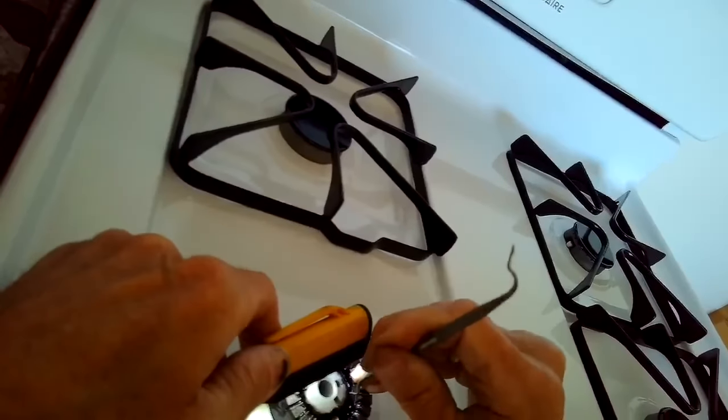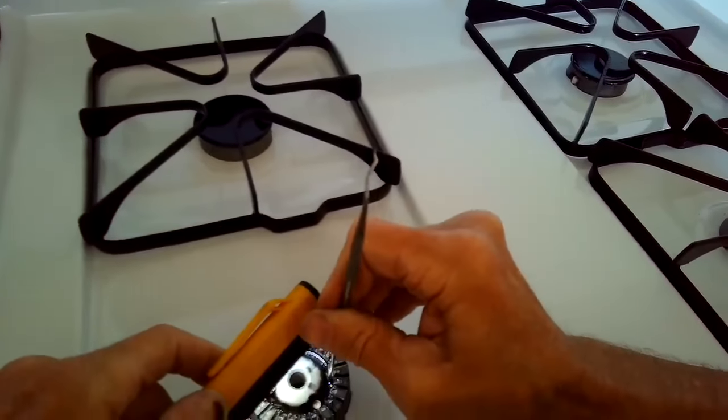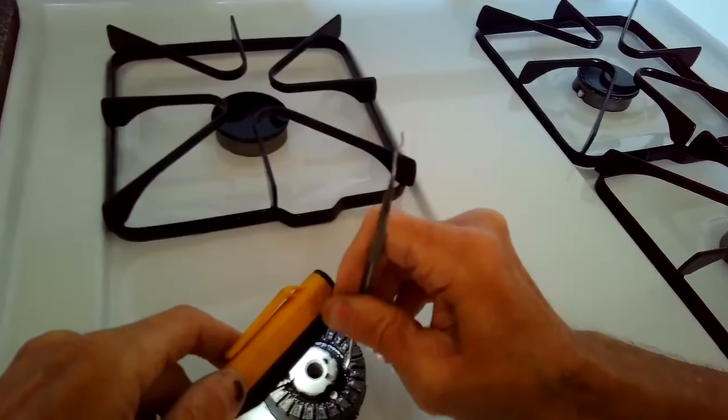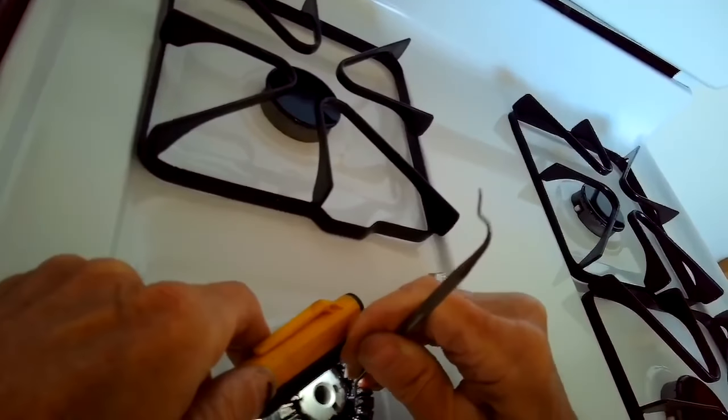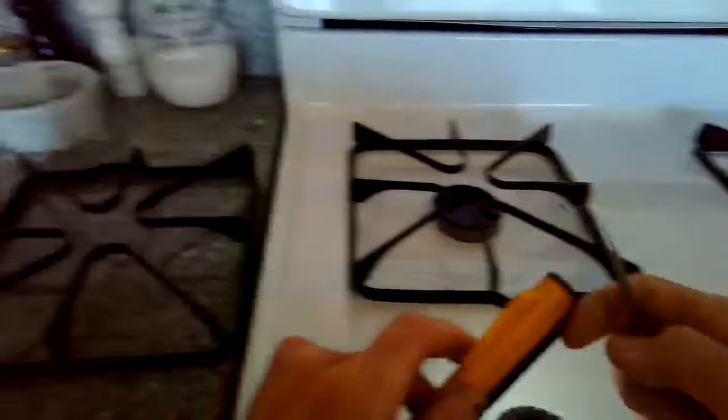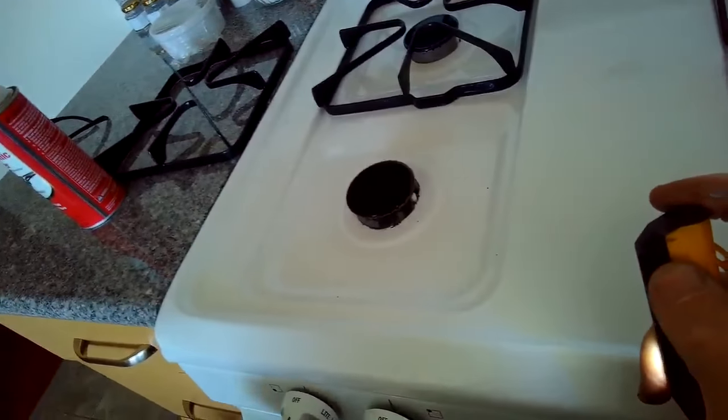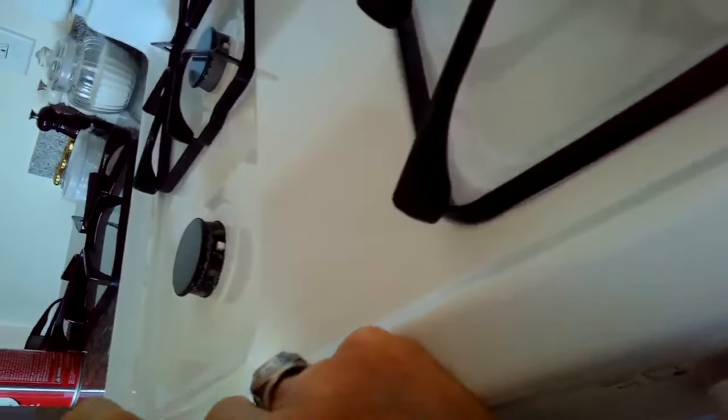In this particular instance, doing that alone did not resolve the problem. So this one I also needed to take another sharp implement—I'm actually using a dental pick here—to remove some more of the debris that was over near where the igniter is. So the gas comes out and when I tried it, it still didn't work.